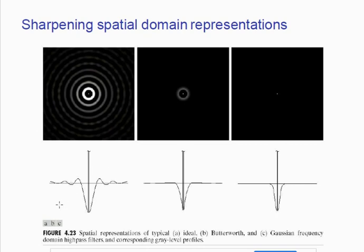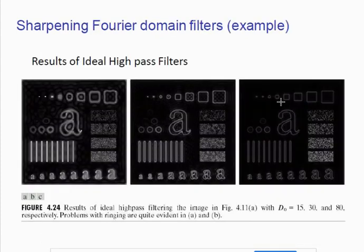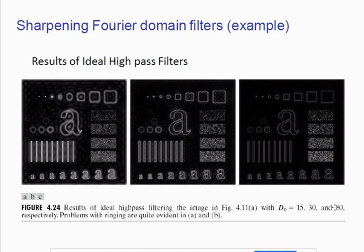The ideal high pass filter has many ripples, and because of these ripples we get rings. The ideal low pass filter and ideal high pass filter have only one ripple, while the Gaussian filter has no ripples and no rings. When using an ideal high pass filter, we set a certain cutoff frequency. On a lower cutoff frequency we get very little sharpening; on a higher cutoff frequency we get better sharpening, and more higher frequency components are passed.